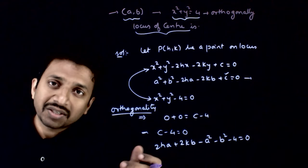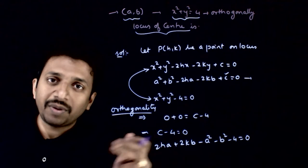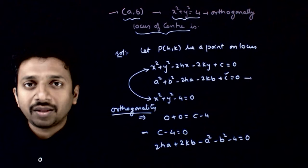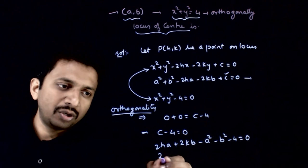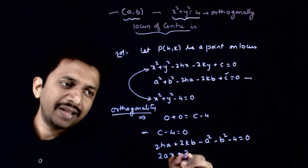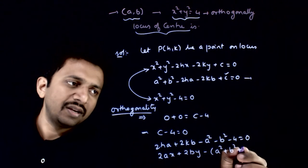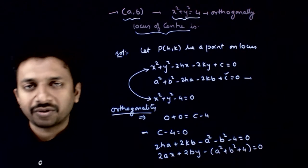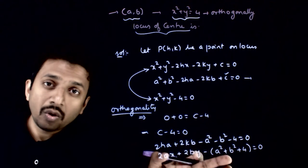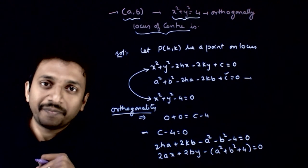Once you get this condition, the locus can be obtained by putting x in place of h and y in place of k. So 2ax + 2by - (a² + b² + 4) = 0. This is the locus of the center of the circle. Thank you.